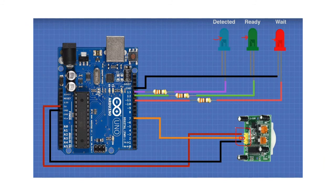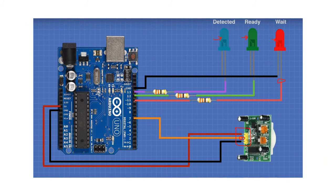For the PIR sensor code, we declare pin 13 as the motion-detected LED, pin 12 as the ready LED, and pin 11 as the wait LED. The motion sensor is connected to pin 7. In setup, the LED pins are declared as outputs. If movement is detected, pin 13 lights up. The ready LED shows the sensor is ready to detect, and the system delays about 60,000 milliseconds — roughly 60 seconds — before checking again.